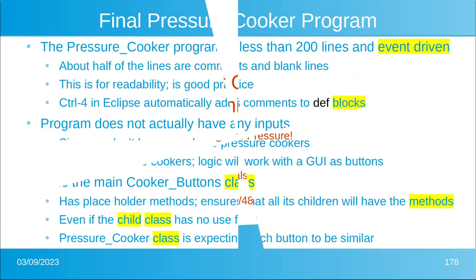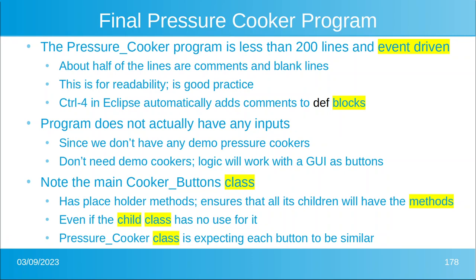The final pressure cooker program that you see on the shared folder is about 200 lines. It's event driven and about half of the lines are comments and blank spaces. We use all that blank space because it's good practice — it makes it easy to read the code, especially a year or two after you haven't touched it, because in real life you're going to be working on several different projects at once and waiting for the customer to get back to you.